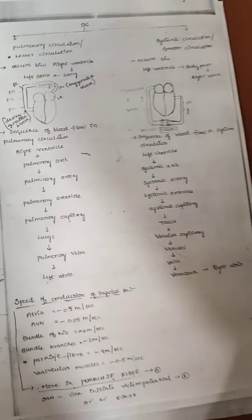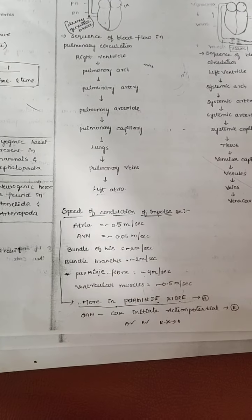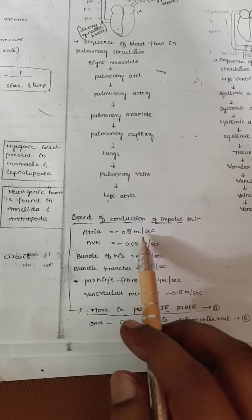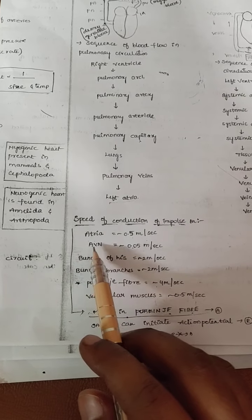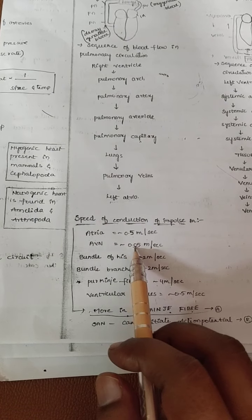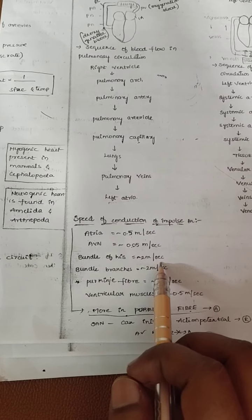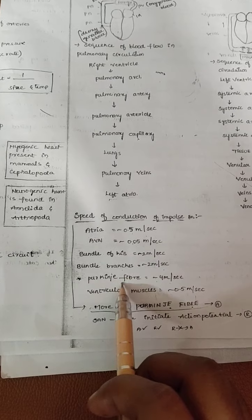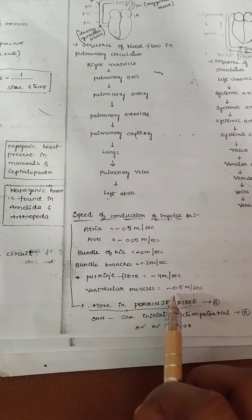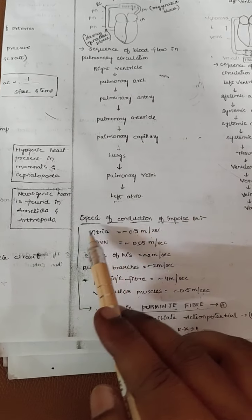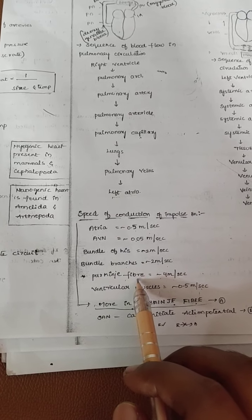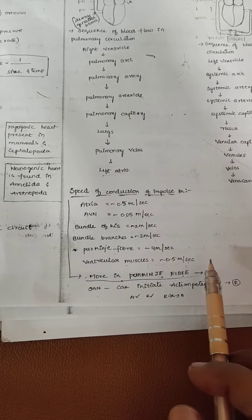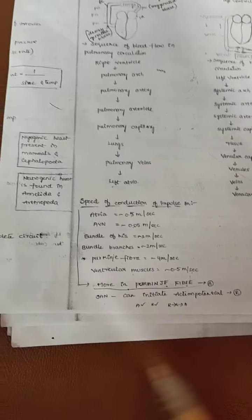The conduction of impulse speed: in the atria it is 0.5 meters per second. The atrioventricular node is 0.05 meters per second. The bundle of His is 2 meters per second. The bundle branches have small Purkinje fibers at approximately 2 meters per second, and for Purkinje fibers it is 4 meters per second. Ventricular muscles are 0.5 meters per second. The sinoatrial node initiates the action potential, but the most conduction of impulses takes place in the Purkinje fibers.